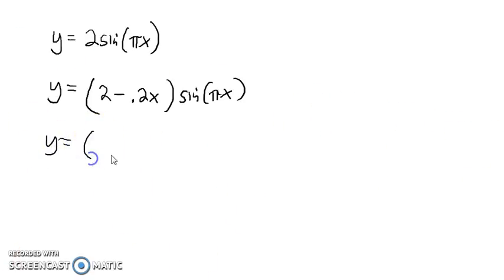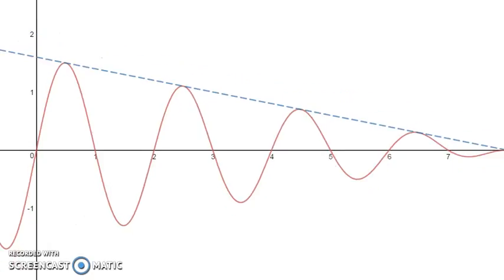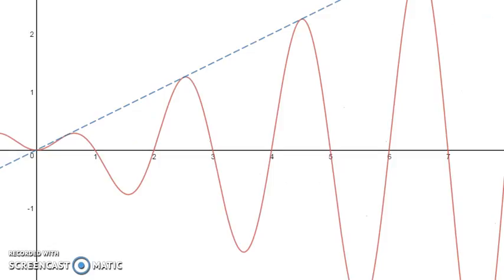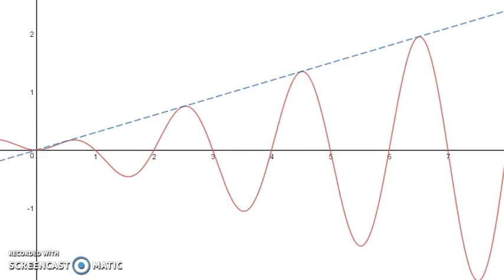Likewise, we could have an equation like maybe 0.5x times sine πx. Here, our amplitude would start at 0 and be increasing by 0.5 for each x. Let's see what that looks like. If we bring our starting value down to 0 and our slope to 0.5, here we can see an increasing amplitude. If I decrease the slope a little bit, maybe you can see that even better.